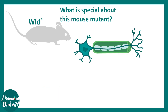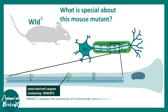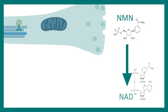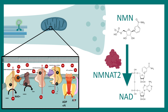To understand the WLDs mutant, we have to understand an important cellular process. The cell soma of any neuron produces an enzyme known as NMNAT2. This enzyme catalyzes the conversion of NMN — nicotinamide mononucleotide — into NAD via a series of biochemical reactions. This is a transferase enzyme that converts NMN to NAD. This process is important because NAD is required in the electron transport chain to produce ATP, so from a neuronal functionality point of view, NAD generation is super important.